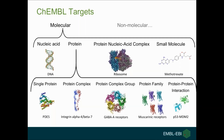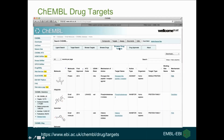ChEMBL handles different types of molecular targets: drugs interacting with proteins, DNA, ribosome, or even small molecules such as antidotes for methotrexate. Within protein targets, we have drugs acting on single proteins like phosphodiesterase-5, specific protein complexes like integrin alpha-4 beta-7, less well-defined complexes like benzodiazepine receptors, non-selective drugs acting on entire protein families, and drugs disrupting protein-protein interactions. You can go to the Browse Drug Targets tab in the ChEMBL interface to download all targets in a tab-separated file for further analysis.